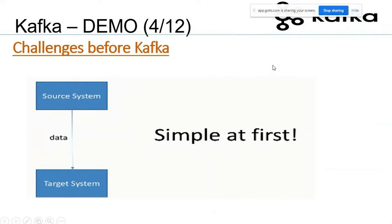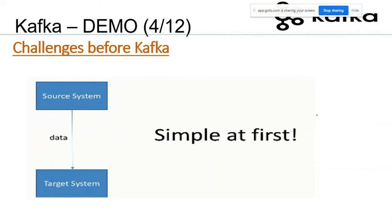Let's start with the challenges before Kafka — why Kafka came into picture. We have a source system and a target system: two applications that want to talk to each other and exchange information. In the industry, two systems communicate to make some business happen. A source system can simply connect directly to a target system and transport the data, which looks very simple.